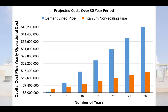Looking at the graph, we can see that in the first year, the upfront cost of the titanium-clad is more than that of the cement-lined pipe, but it will take two and a half years to break even. After five years, we can see a jump in costs. Net savings from use of the titanium-clad pipe over 30 years will be $29 million. Thank you.